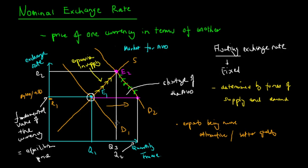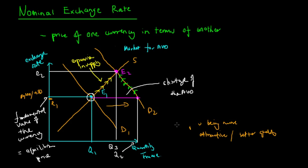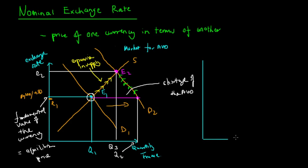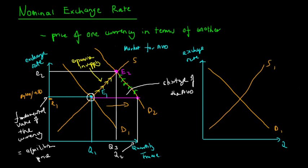The nominal exchange rate changes due to either a change in demand or a change in supply of the currency. Now let's look at the condition where supply changes. We again have quantity on the x-axis and the exchange rate on the y-axis, with an upward sloping supply curve, a downward sloping demand curve, and an equilibrium at Q1 and E1 — the fundamental value of the exchange rate.